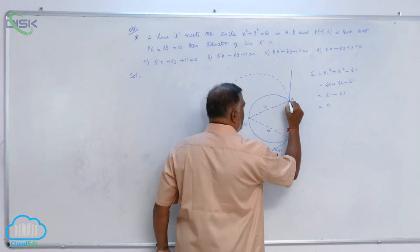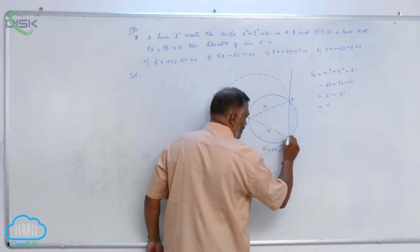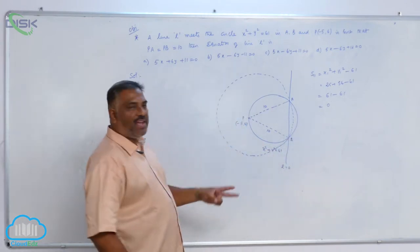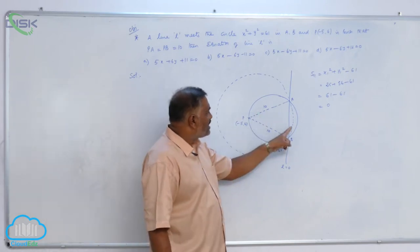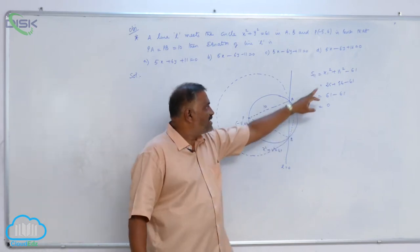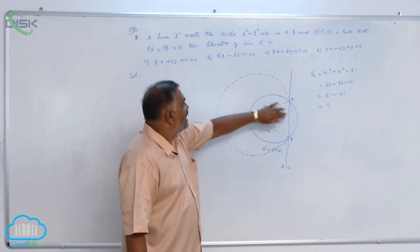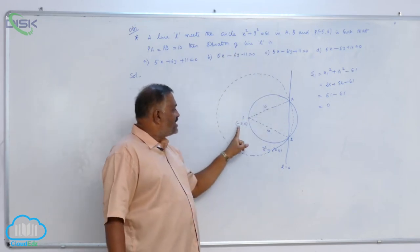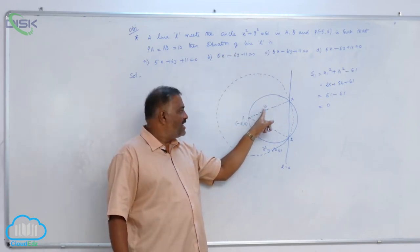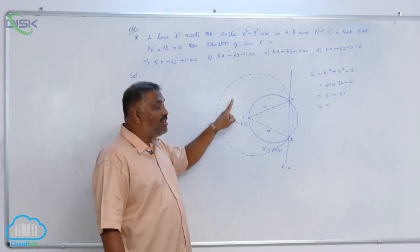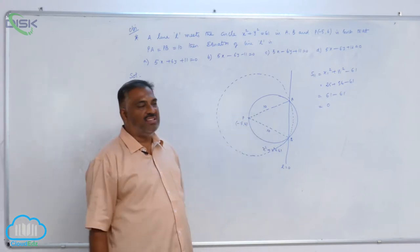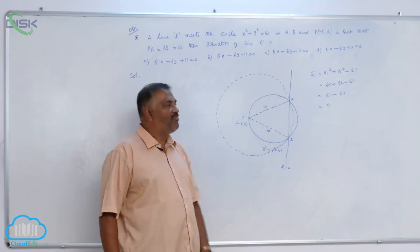You can see very clearly. Now, there are two circles. One circle is the given circle x square plus y square equal to 61. The dotted circle is with center minus 5 comma 6 and radius 10. And what is the nature of these two circles? They intersect each other.